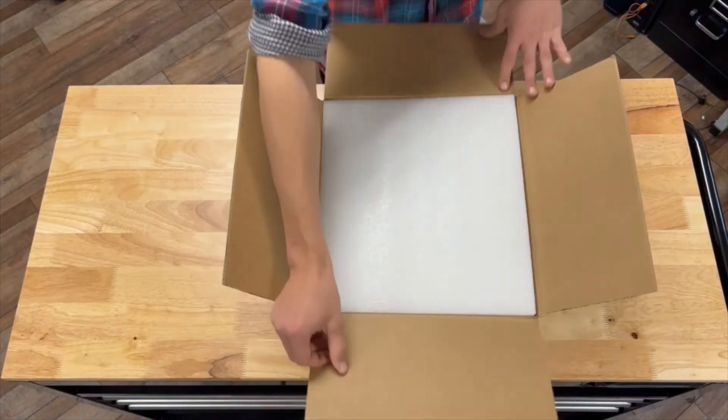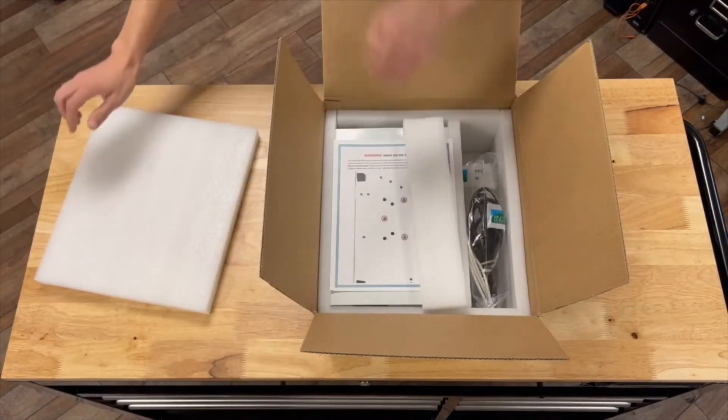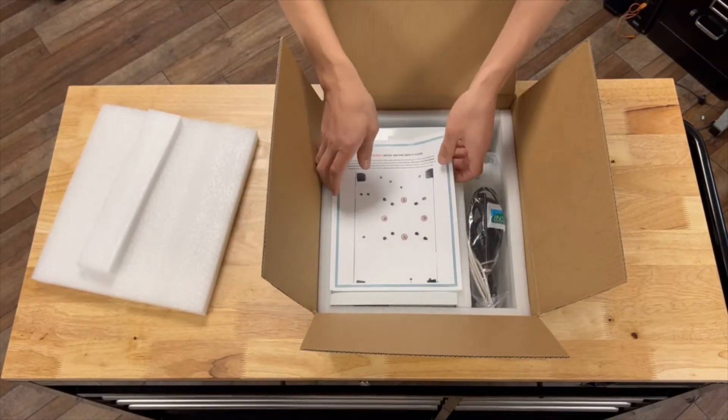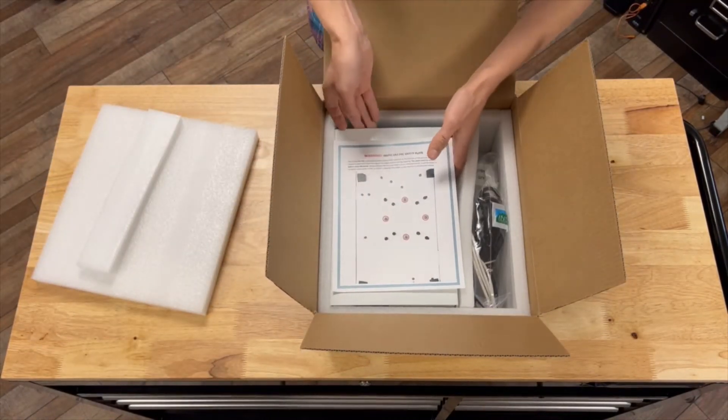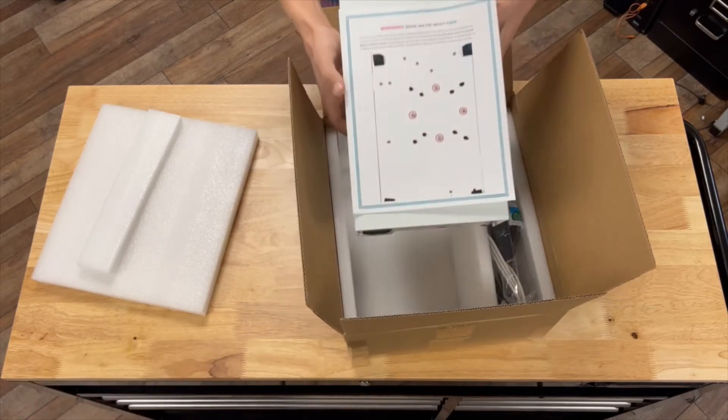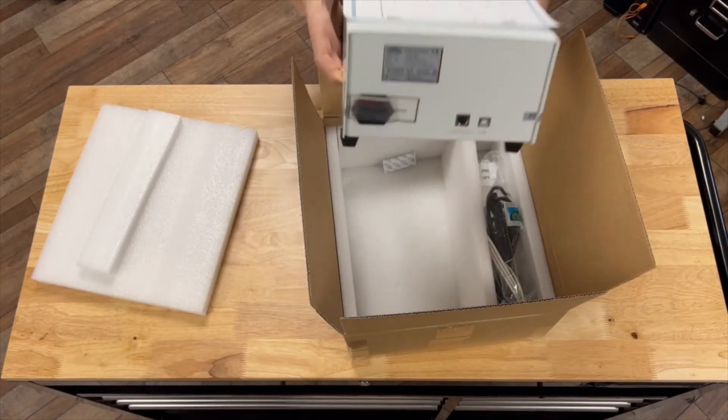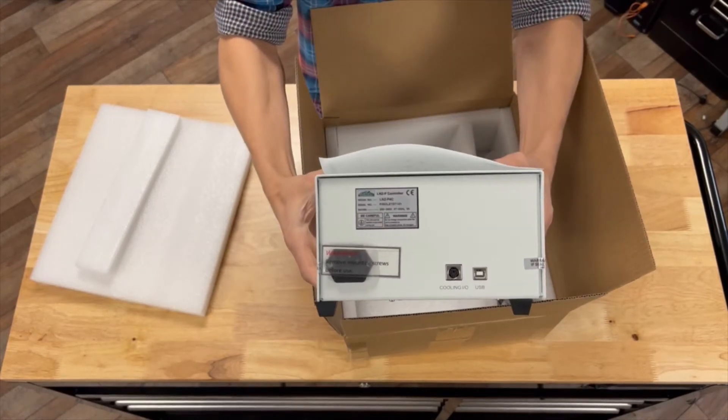An important first step of the setup is identifying and verifying all system components are present. Begin by removing the suction pump. A notice will be included which informs the user to remove all four mounting screws from the underside of the pump. There is also a sticker with the same message covering the power plug.